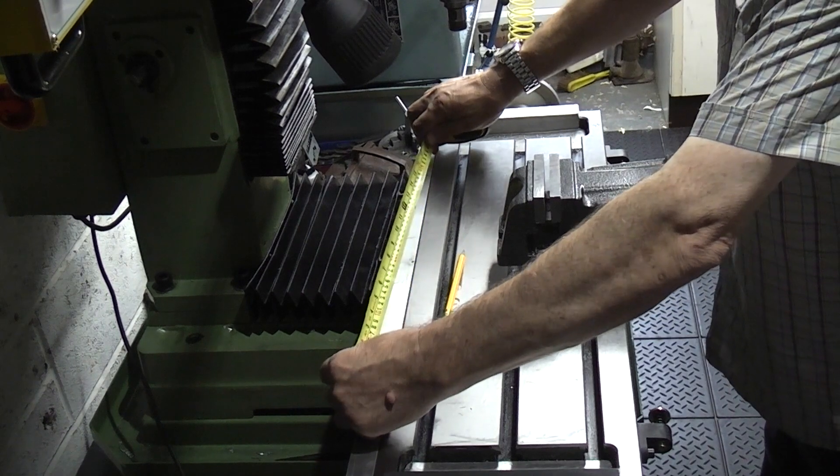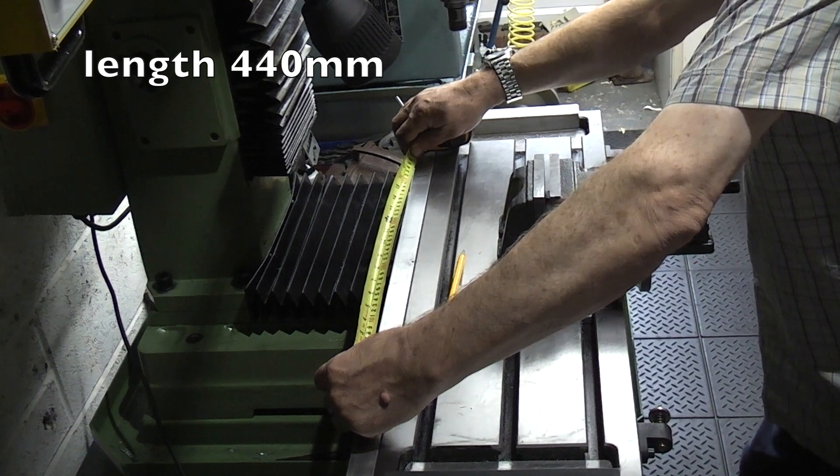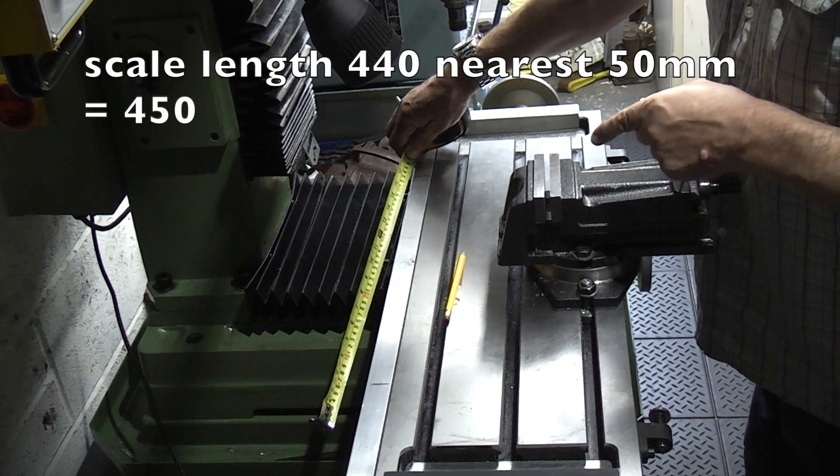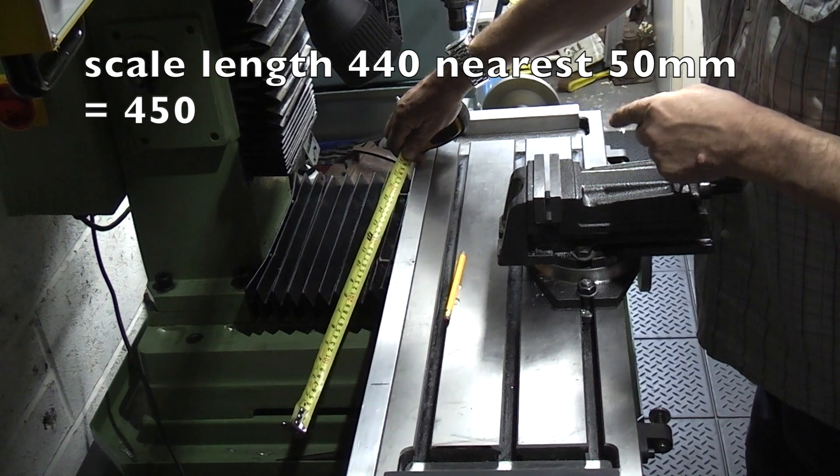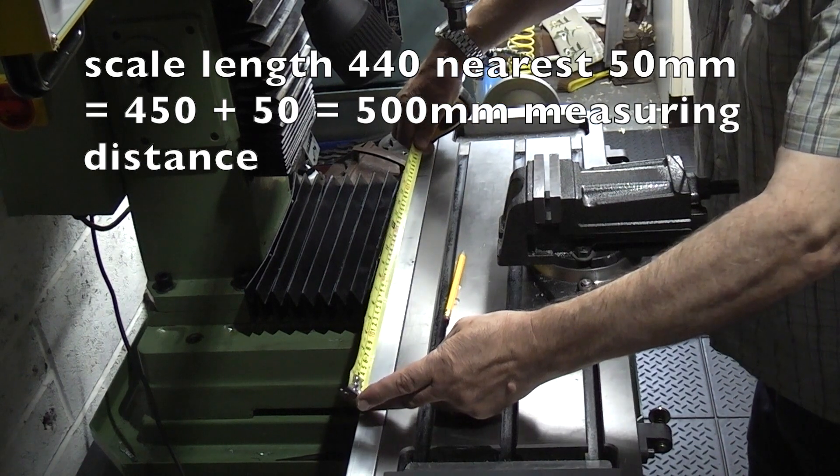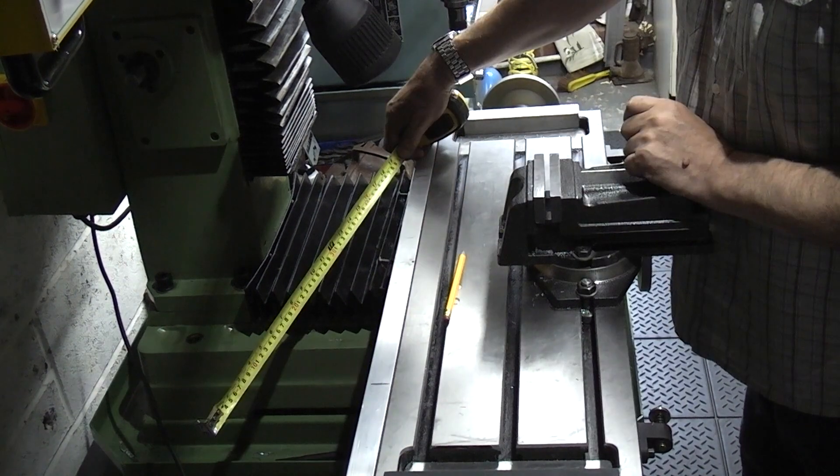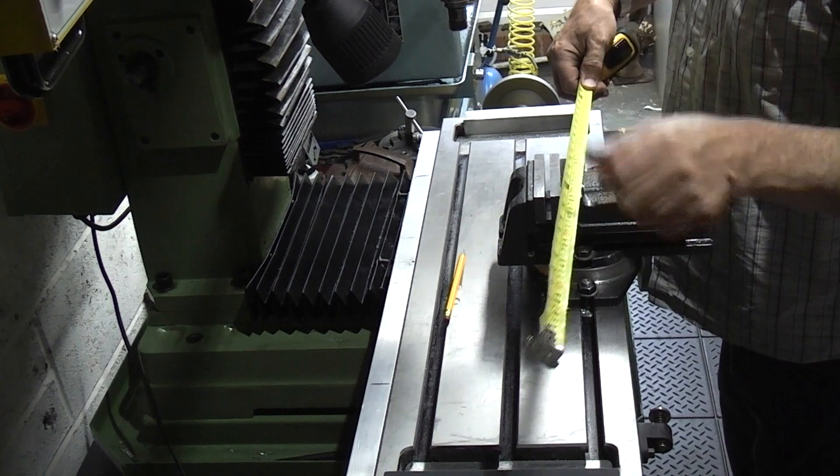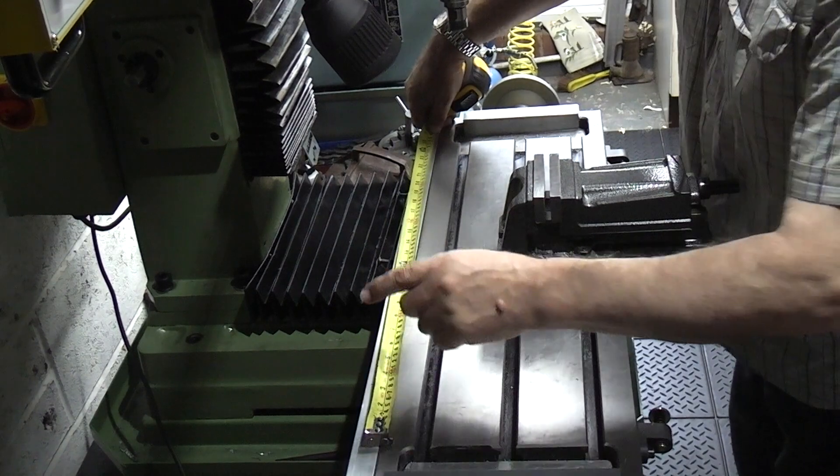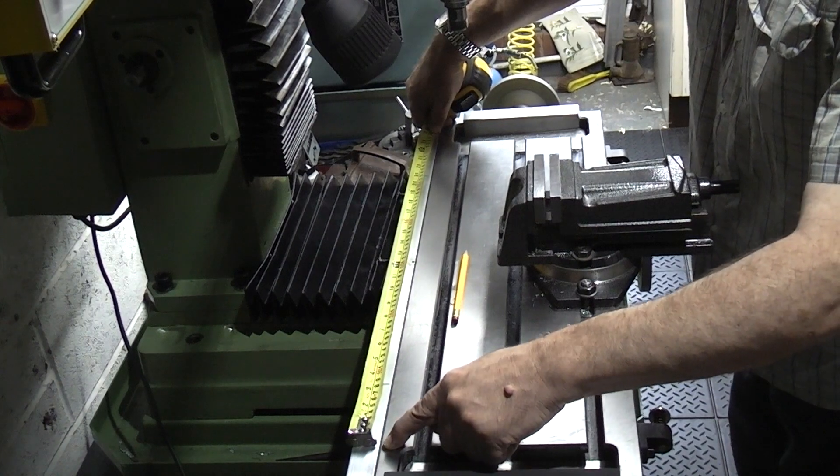So here we've got 440. Now I'm going to add, go up to the nearest 50mm which would be 450, and then I'm going to add another 50mm to that. So that will be a 500 scale, measuring distance of 500. That gives me an inch each end to play with, but the overall length will come in around 650. So just make sure that 650, you still have the ability to screw into your table at 650.